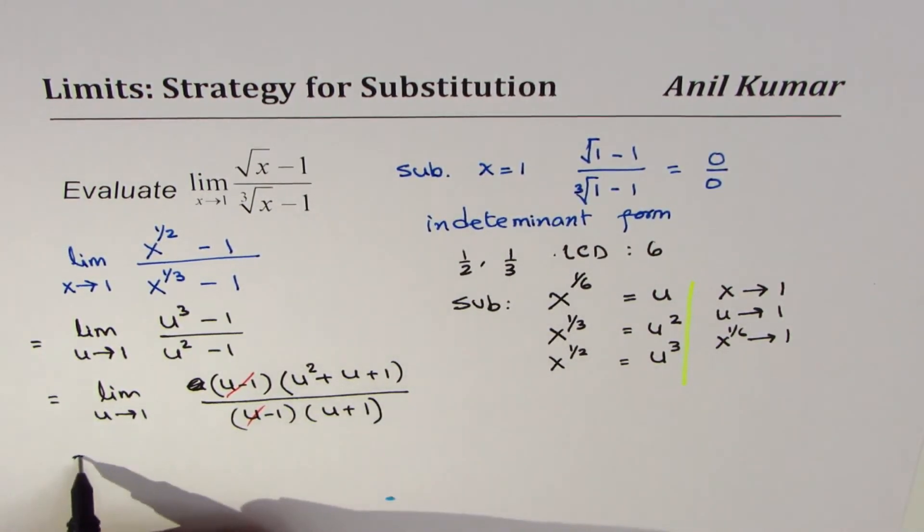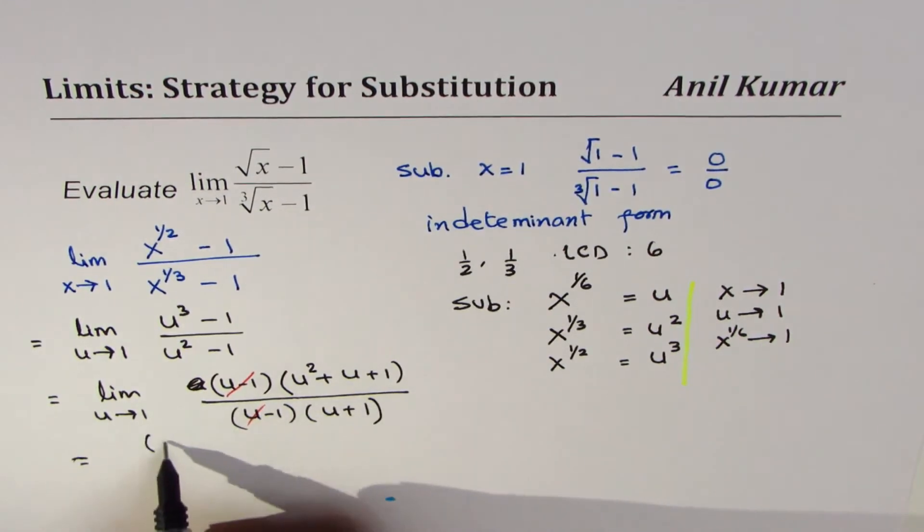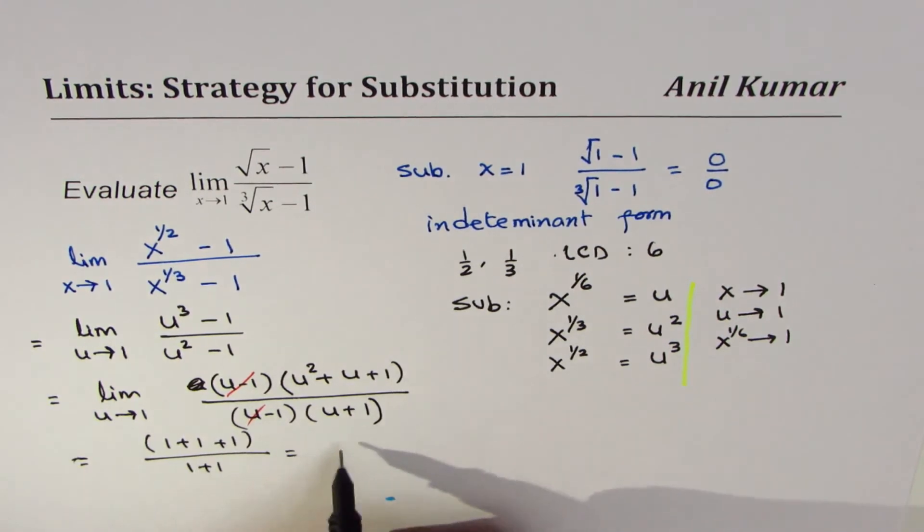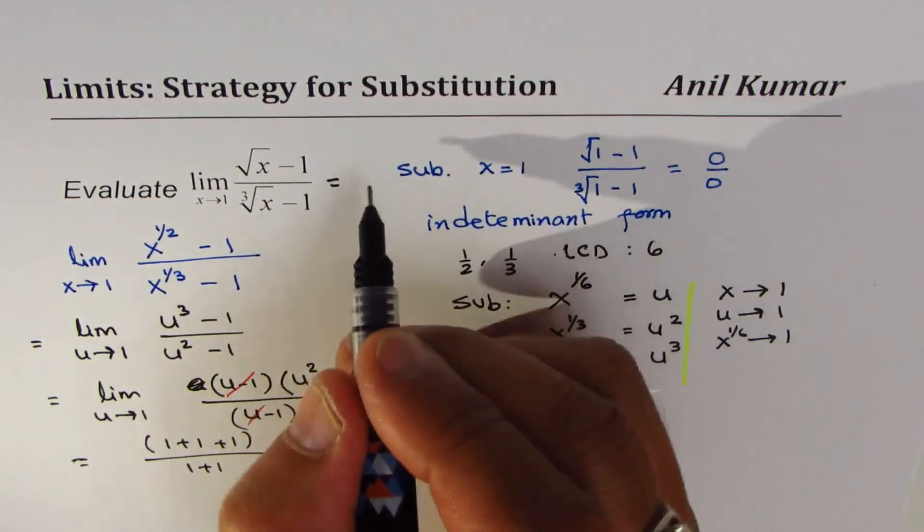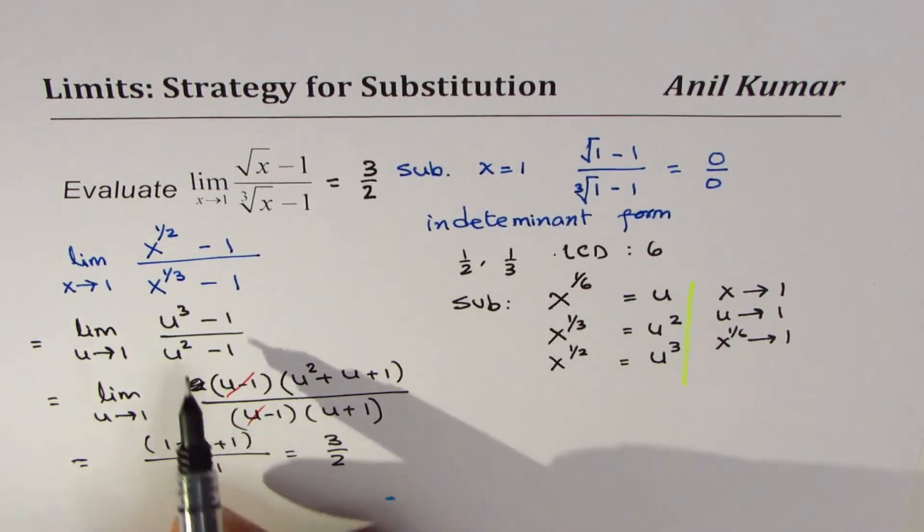Perfect, and now we can substitute u equals to 1 here. So we get 1 plus 1 plus 1 divided by 1 plus 1, which is 3 over 2. So this limit exists and the answer is 3 over 2.